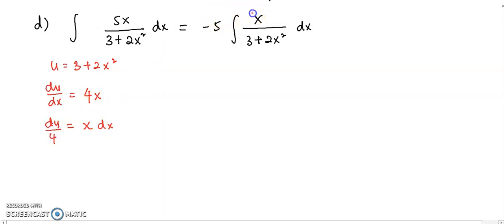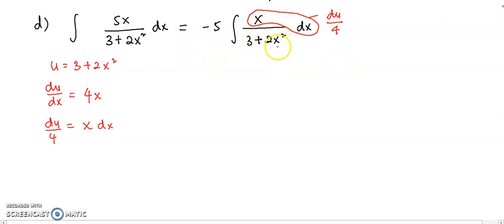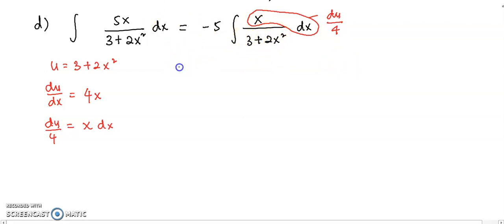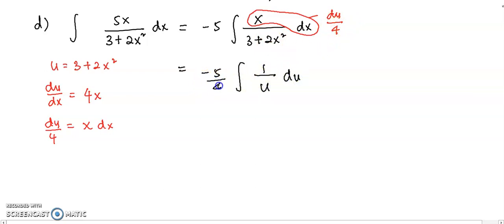In my question, x dx appears here. So later on, this is going to be written as du over 4. And 1 over 3 plus 2x² will be 1 over u. The negative 5, just write it down. And you have 1 over u, du over 4. I'm going to put the 1 over 4 out as a coefficient.